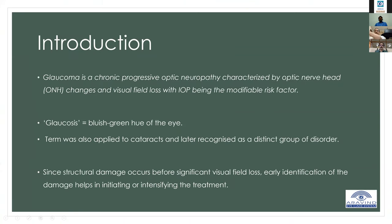Glaucoma is a chronic progressive optic neuropathy characterized by optic nerve head changes and visual field loss, with IOP being the most common and modifiable risk factor. The term 'glaukos,' meaning bluish-green hue of the affected eye, dates back to 400 BC by the Greeks. Even Hippocrates mentioned this term in his writings; it was also applied to cataracts but later confined to the glaucoma condition.